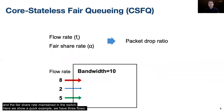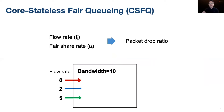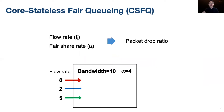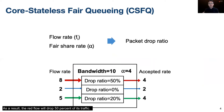Here we show a quick example. We have three flows coming, and the flow sizes are 8, 2, and 5 respectively. The link bandwidth is 10. The fair share estimator would calculate the fair share rate alpha as 4. As a result, the red flow will drop 50% of its traffic, and the green flow will drop 20%.